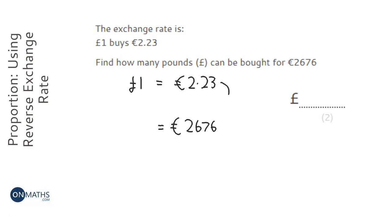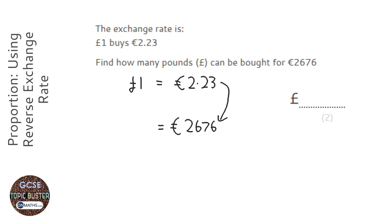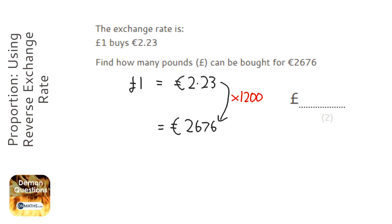We've got to work out how do you get from here to here. The way of doing that is 2,676 divided by 2.23, and they're all on the calculator. So we know we've got to times that by 1,200, which is what the calculator has told me when I did 2,676 divided by 2.23. I can check that by typing 2.23 times 1,200, and it gives me 2,676. So if that works that side, it has to be able to work this side as well.